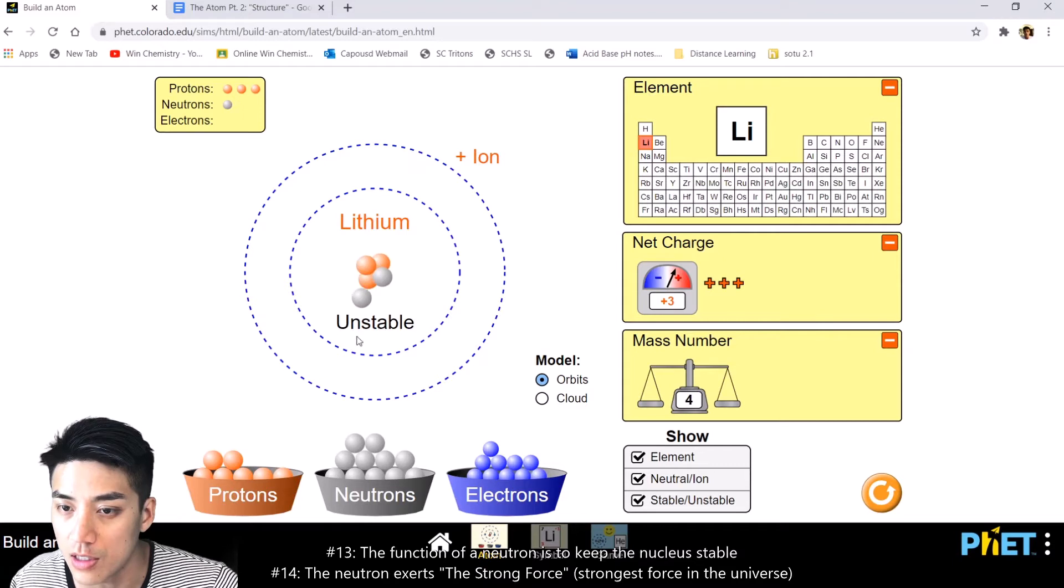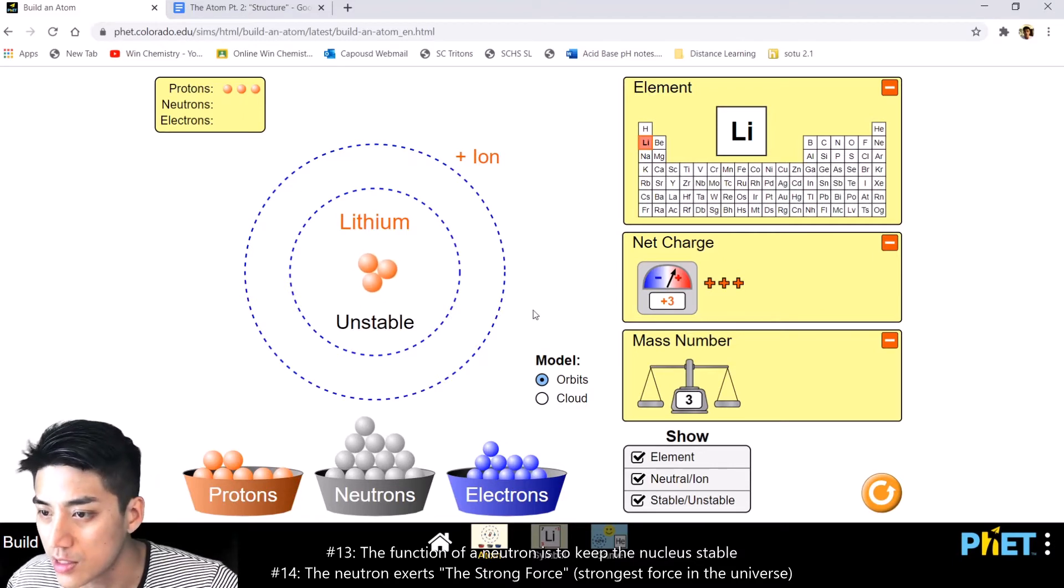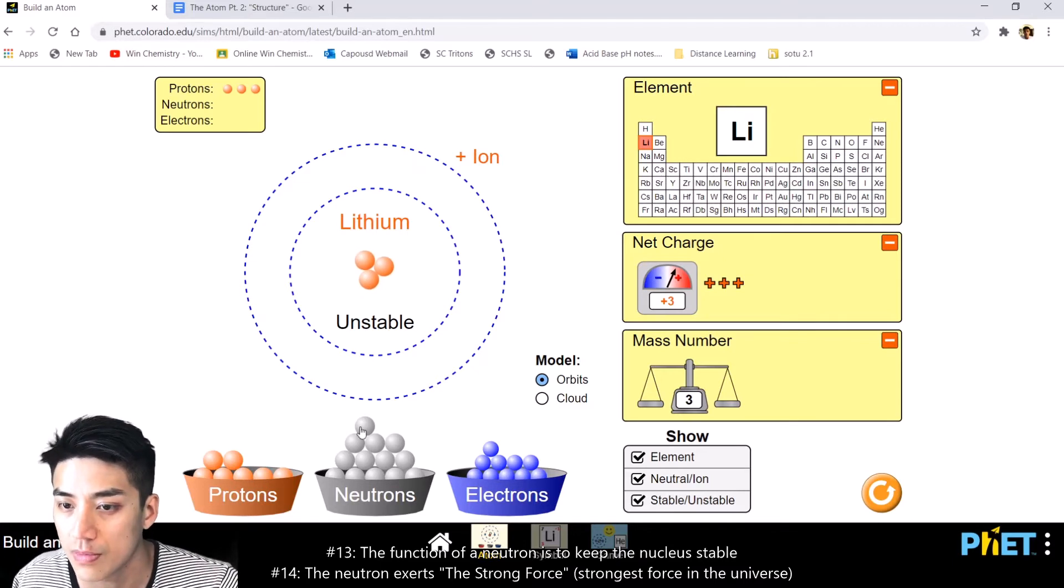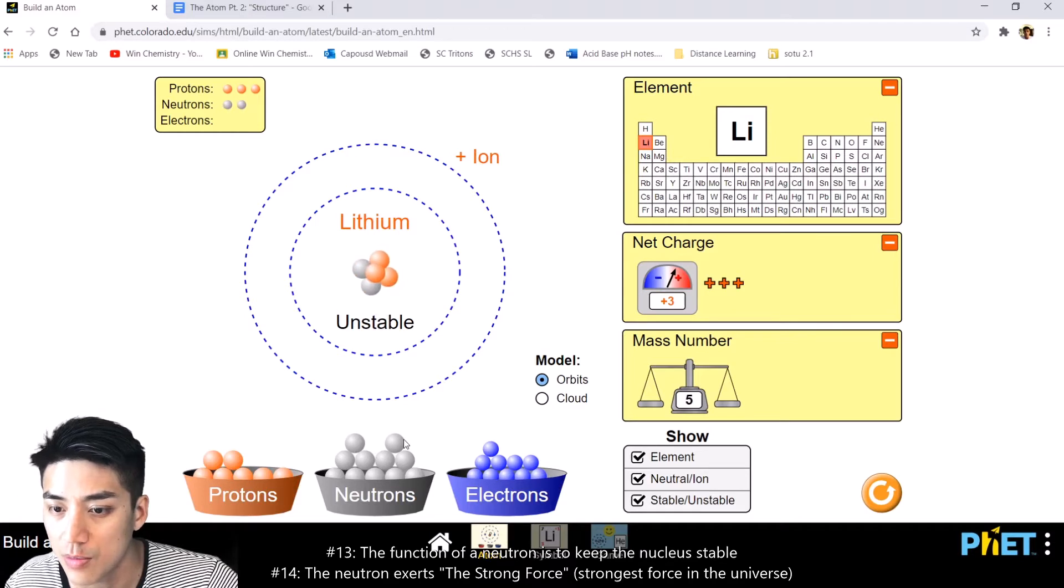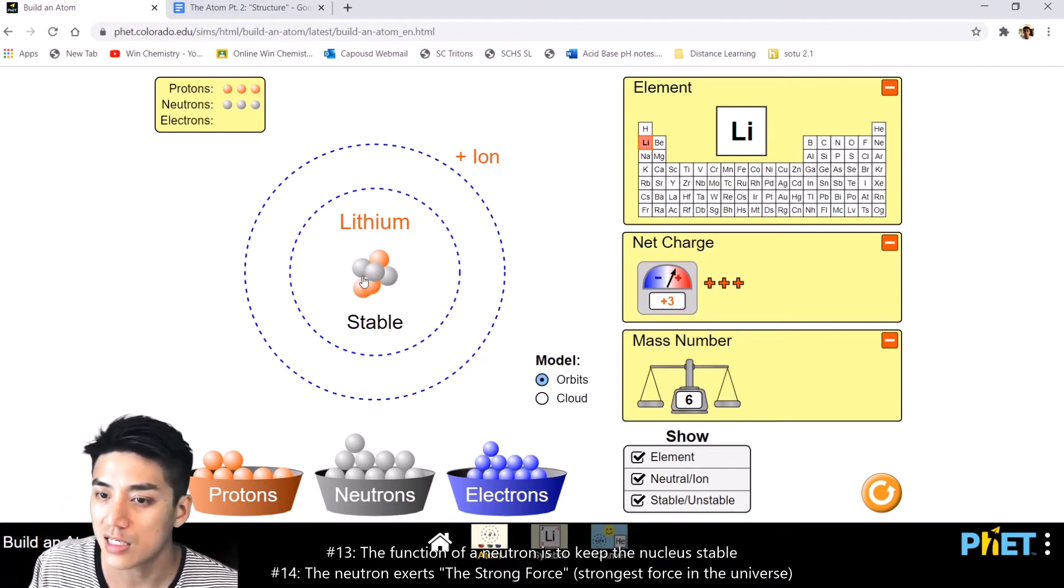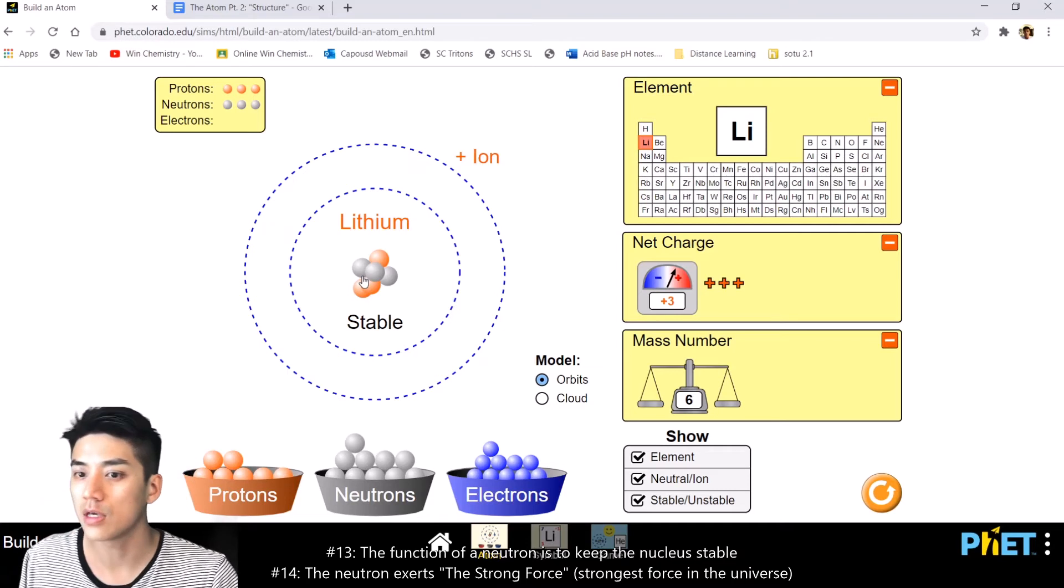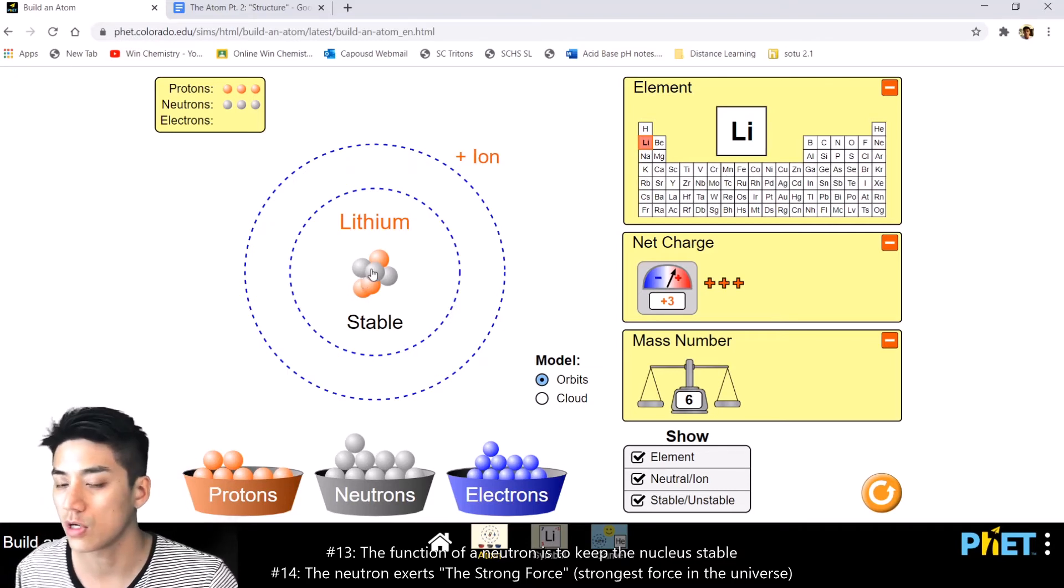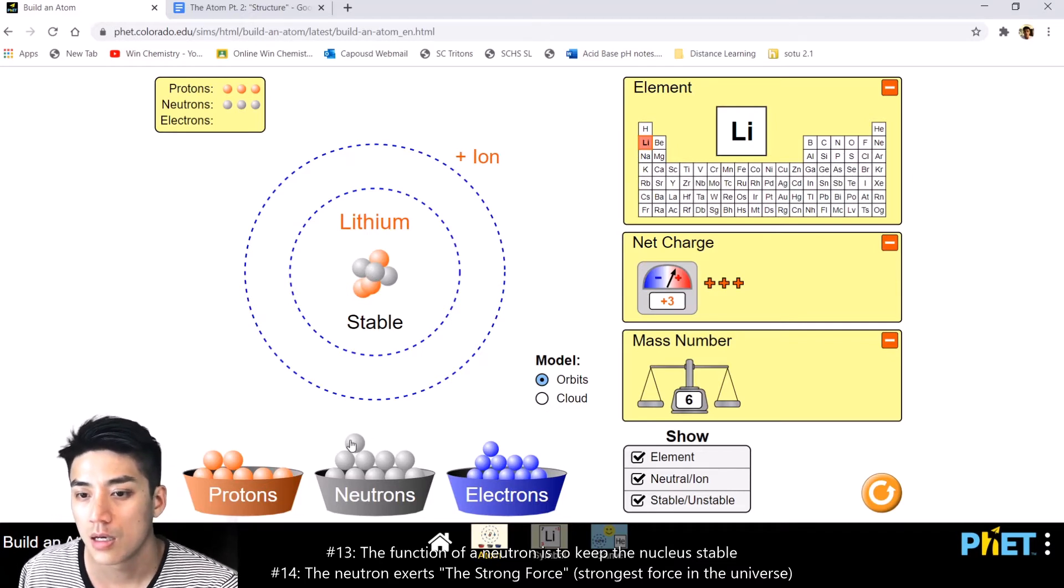And it keeps your nucleus under control. Because without the neutrons, if you really think about it, all you have are protons here, which are positively charged. And these guys all repel each other because like charges repel. They don't want to be next to each other. But as soon as you throw in the neutrons, it stabilizes it and offsets the repulsion occurring inside the nucleus. It acts sort of like a glue. Think of neutrons as glue or like providing structure or a backbone to the nucleus. It keeps it nice and stable.